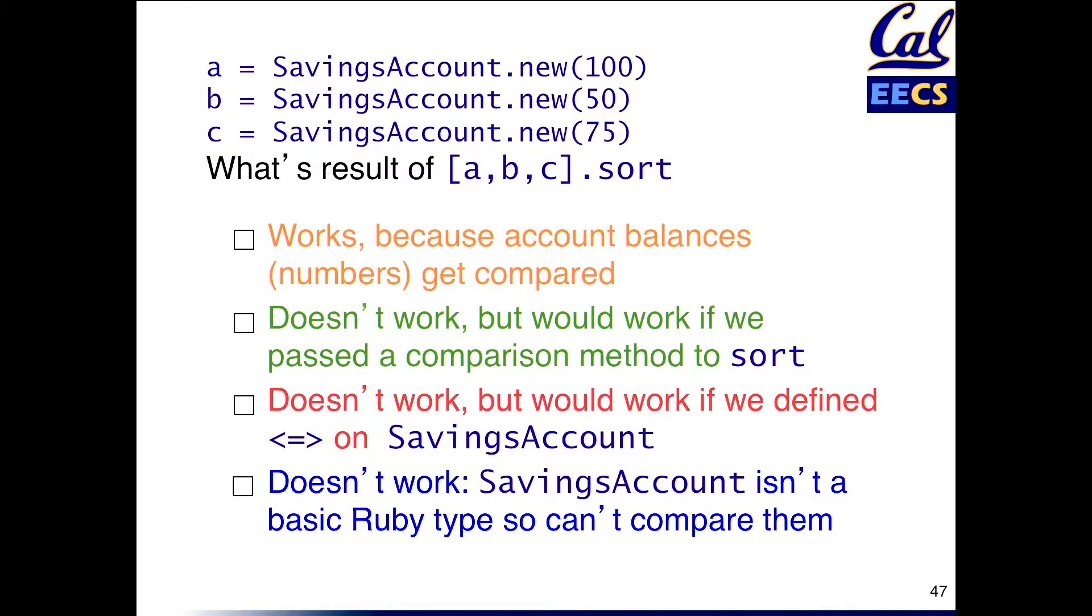So if I define, here I've got three savings accounts that I've initialized with three different balances and suppose I try to put those three savings accounts into an array and I try to call sort on that array. So what happens in this case?